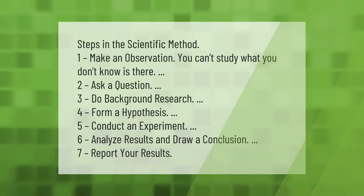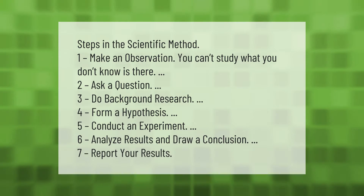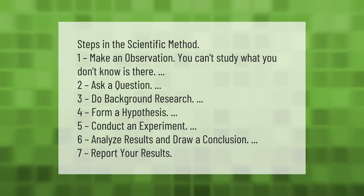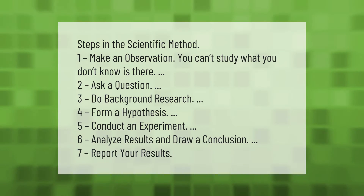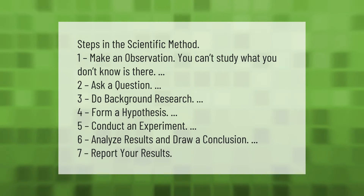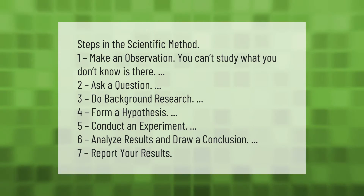Steps in the scientific method: one, make an observation — you can't study what you don't know is there; two, ask a question; three, do background research; four, form a hypothesis; five, conduct an experiment; six, analyze results and draw a conclusion; seven, report your results.